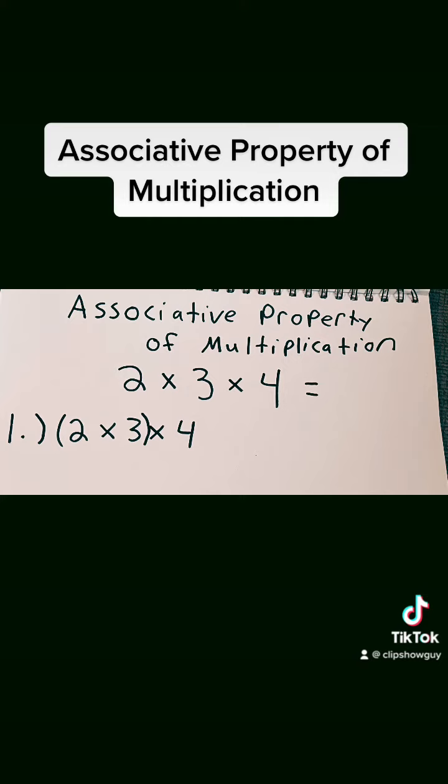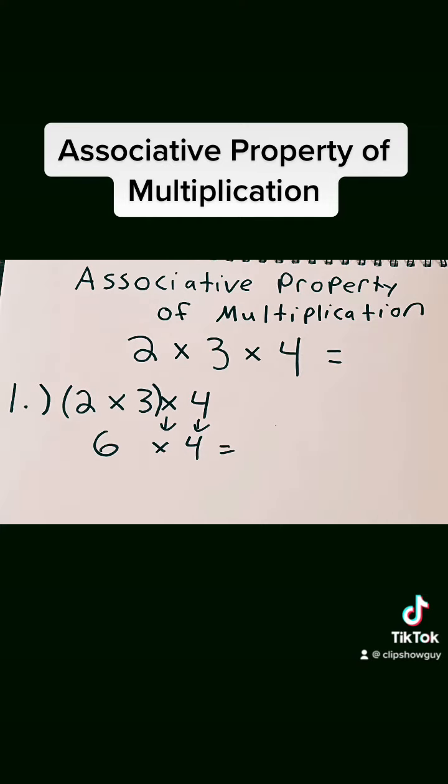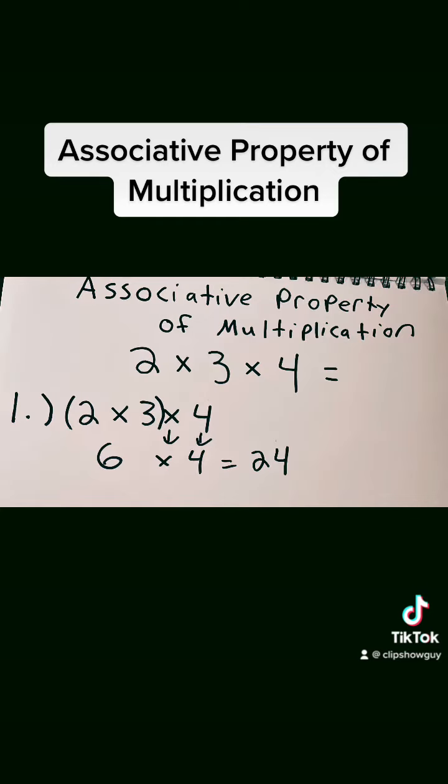So I'm going to start by multiplying 2 times 3. 2 times 3 equals 6, and I'm left with 6 times 4. 6 times 4 equals 24.